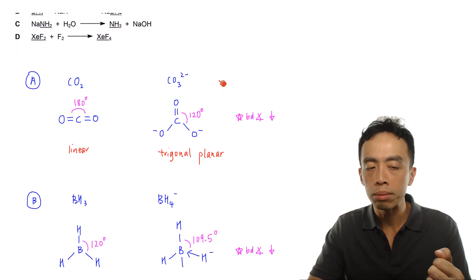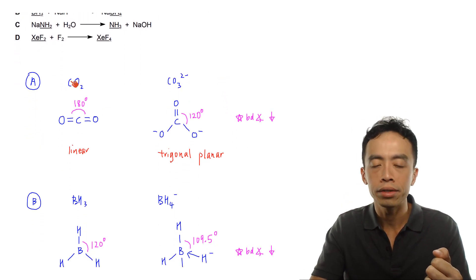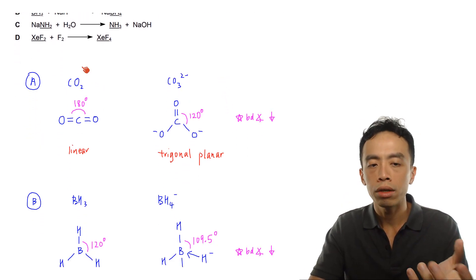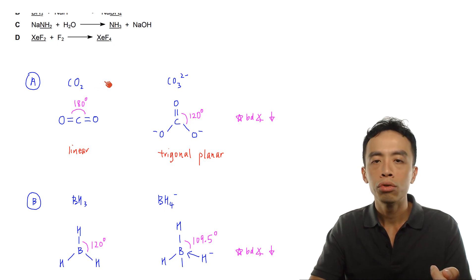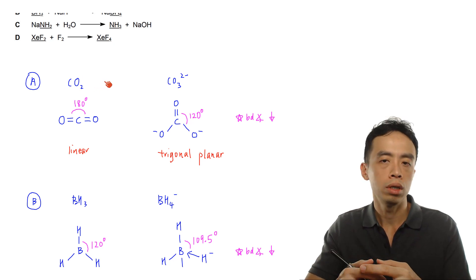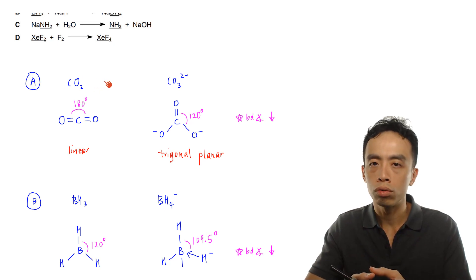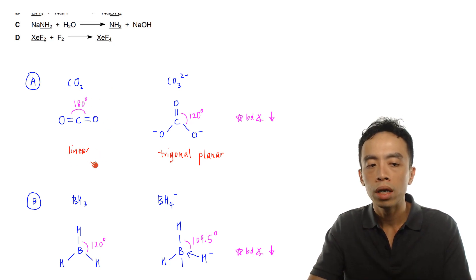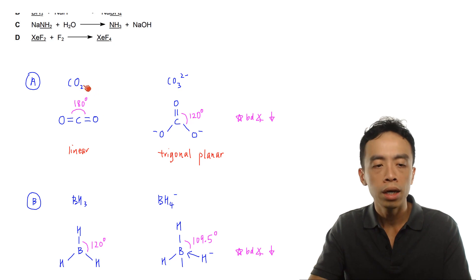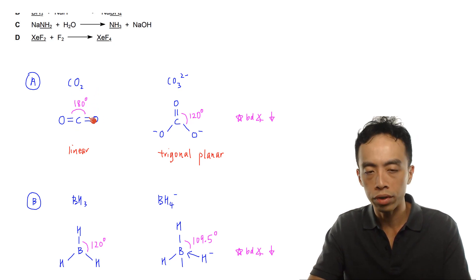If I consider carbon dioxide as the reactant, CO2 is a standard molecule so we should be able to recall its shape straight away. CO2 has two bond pairs and no lone pair; the shape with respect to carbon is linear, and the bond angle is 180 degrees.